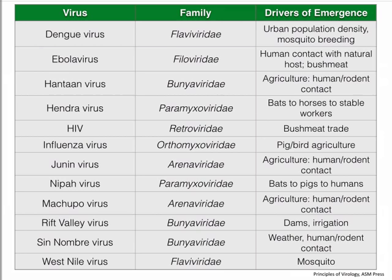Hantavirus is a consequence of human-rodent contact. Hendra virus goes from bats to horses to stable workers. Nipah virus goes from bats to pigs to humans. Many of these viruses get pushed into people as a consequence of agriculture, human-rodent contact, or the construction of dams and irrigating farmlands, which bring new viruses into contact with people. These activities have increased lately, and we do new things as well that we didn't do before.